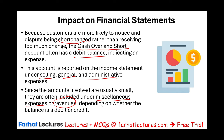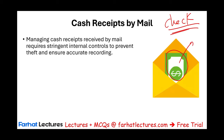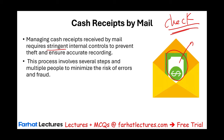This is how we handle over-the-counter cash — actual cash received by a clerk from customers. Another way to receive cash is by mail. By mail means receiving a check, not cash. Managing cash received by mail also requires stringent internal controls to prevent theft and ensure accurate recording. Even though it's a check, someone could manipulate the information, so we need to make sure checks make it to the bank. This process involves several steps and multiple people to minimize the risk of errors and fraud.